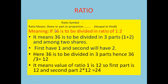The value of ratio 1 will be 36 divided by 3, equal to 12. The first part is 1, so this part is 12. Now the second part — ratio 2 — since the value of ratio 1 is 12, the value of ratio 2 will be 24.